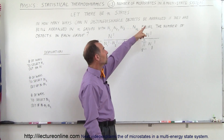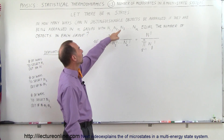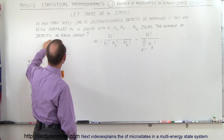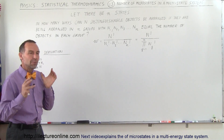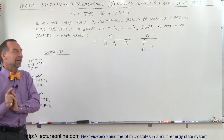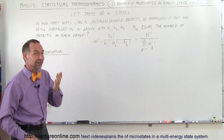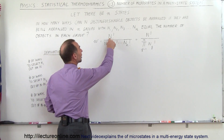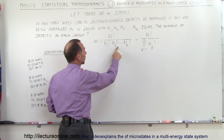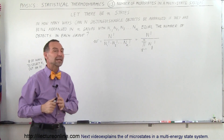In how many ways can those objects be arranged if they are being placed into n groups, with n1, n2, n3, all the way up to n sub n equal to the number of objects in each group? In other words, how many microstates do we have in that case? The equation we use is equal to the total number of objects factorial, divided by n1 factorial times n2 factorial times n3 factorial times n4 factorial, all the way up to n sub n factorial, depending upon how many groups we have.